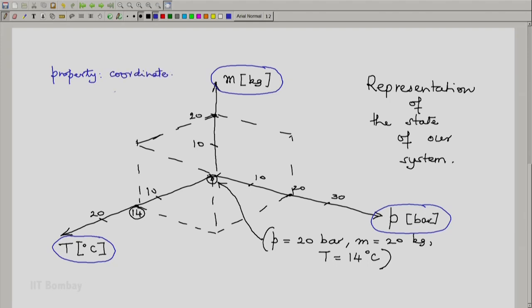The geometric space represents the thermodynamic space, and what is represented is the state of our system. One should appreciate the analogy between geometric space and thermodynamic space. This is known as thermodynamic state space.